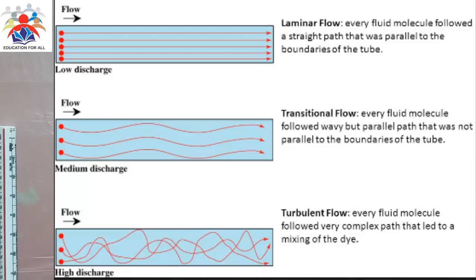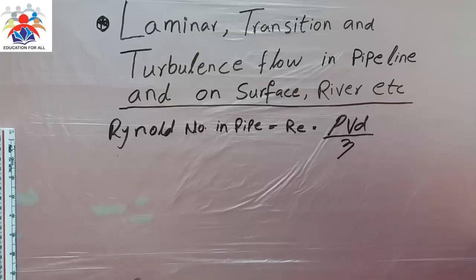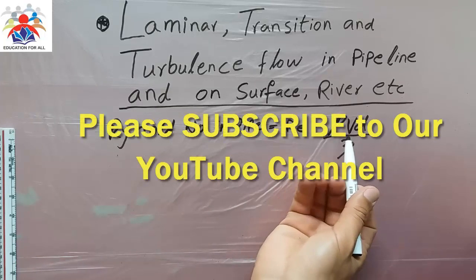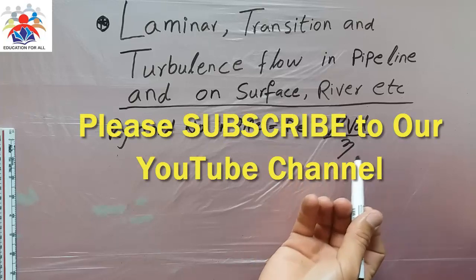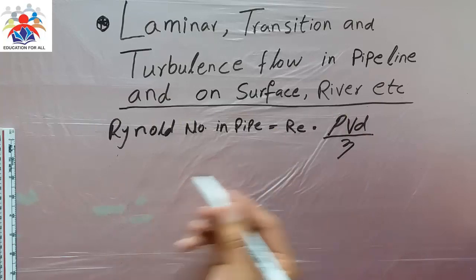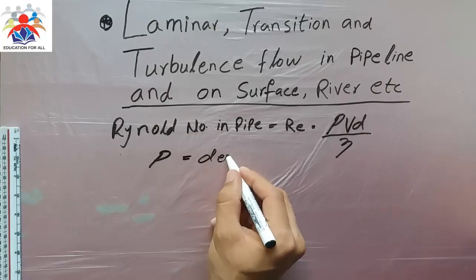Now I'm going to explain how to calculate the Reynolds number in a pipeline as well as in a riverbed, because we have two different formulas. The Reynolds number in a pipeline — the formula for that is: rho multiplied by V multiplied by diameter, divided by the coefficient of viscosity.